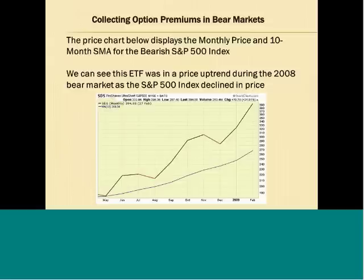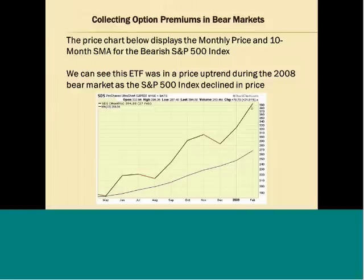Here's a price chart of an inverse ETF — the inverse S&P 500 index back in 2008. The black and red line shows the monthly price movement of the inverse ETF, and the blue line is the 10-month simple moving average. The inverse ETF was in a price uptrend because it's the inverse of the S&P 500 index movement — as the S&P 500 declined, the inverse ETF increased in price and was in a price uptrend, so we wrote covered calls on it.